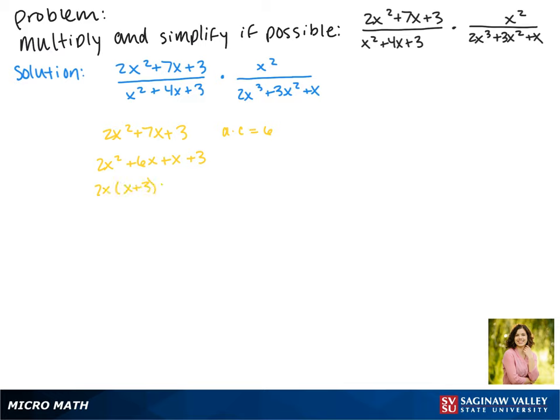Now from the first grouping, we can factor out a 2x. And using the grouping method, this gives us 2x + 1 times x + 3. So we're going to put that in our expression.